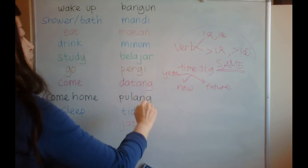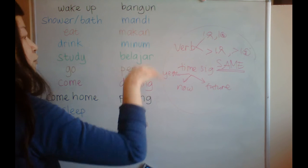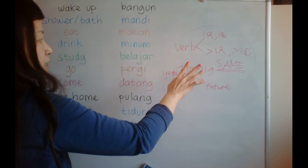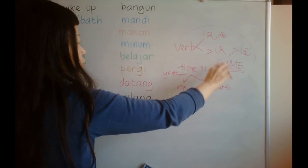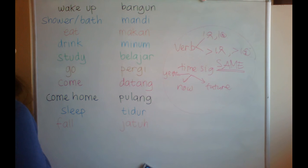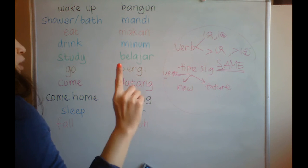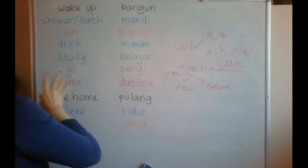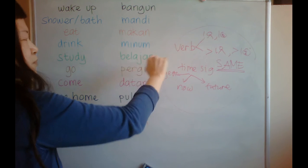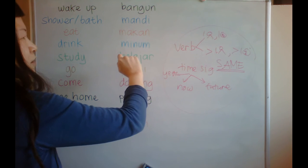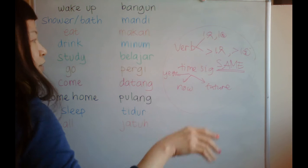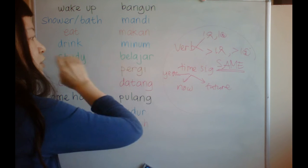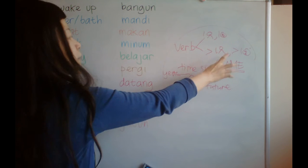The time signal for yesterday, now, or in the future — all the verbs are the same. So we just have to learn one single word for one single meaning, no matter the subject or the time signal — we use the same verb.